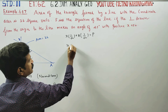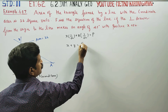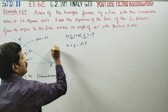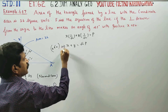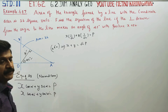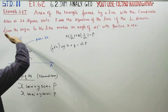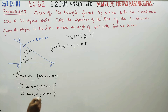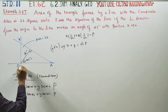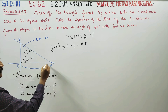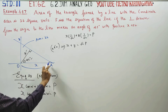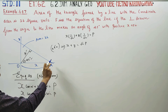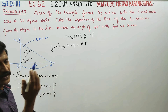Multiplying through by √2, we get x + y = √2P. This is the equation of AB. OA is the x-intercept.